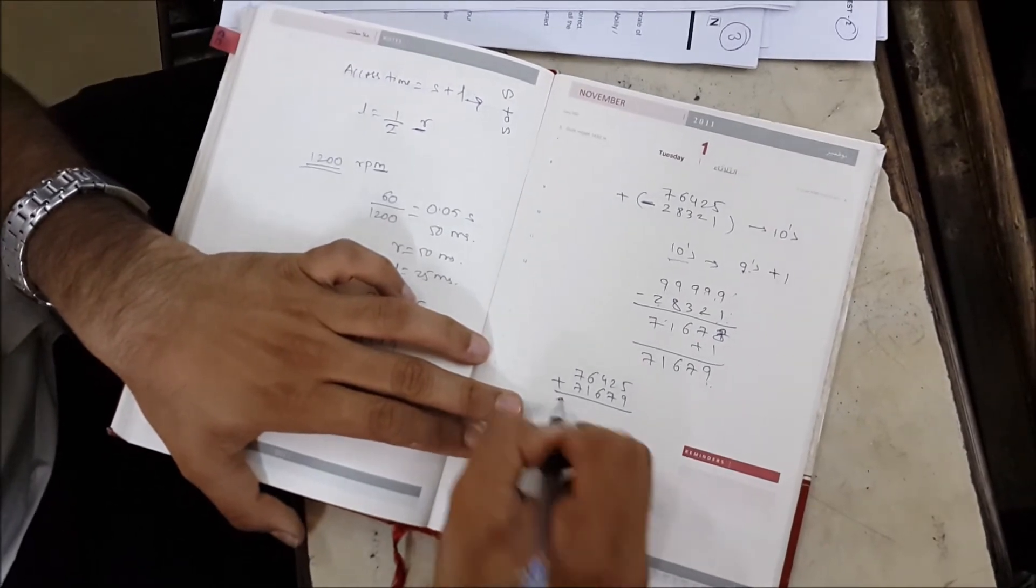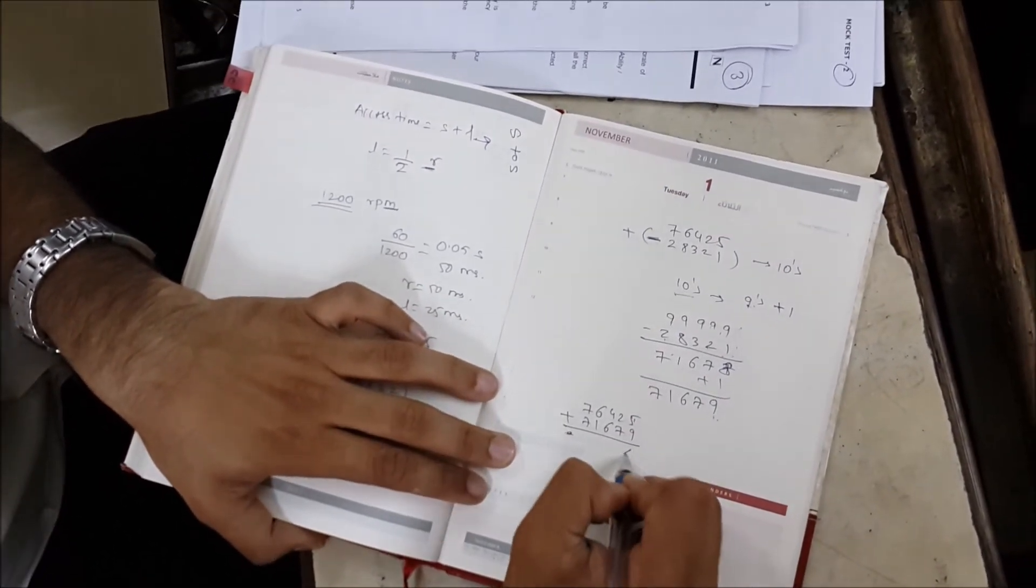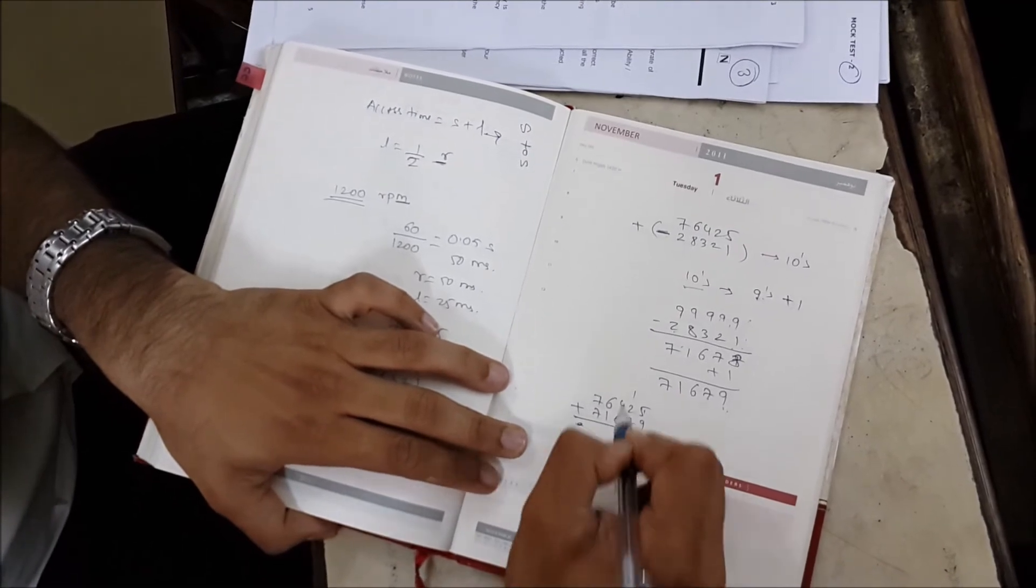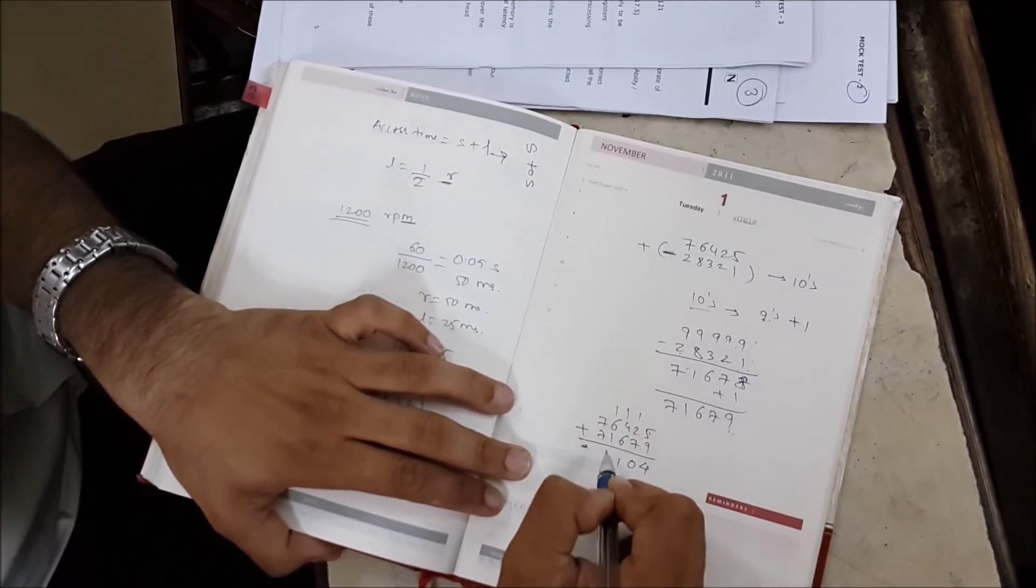So when you add, it is 5 plus 9, which is 14. This is 10, this is 11, this is 8.